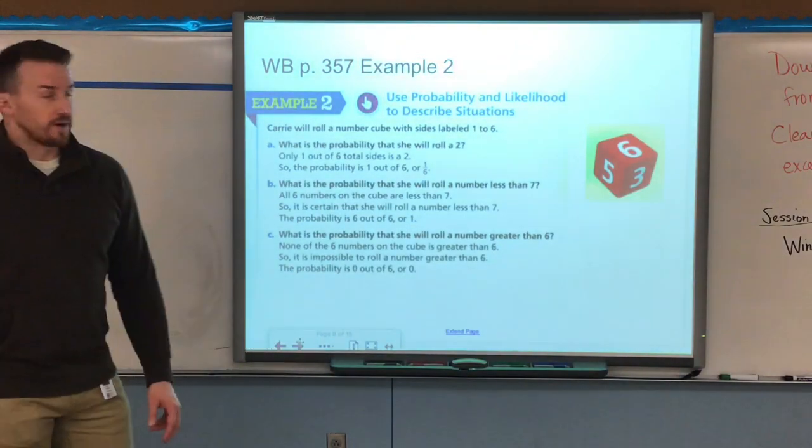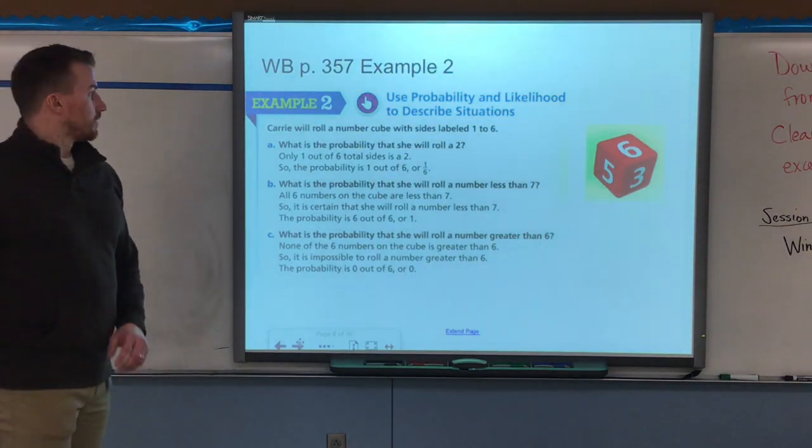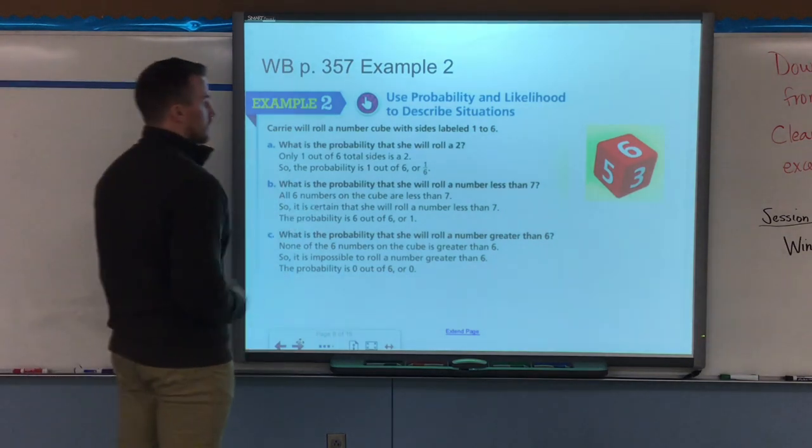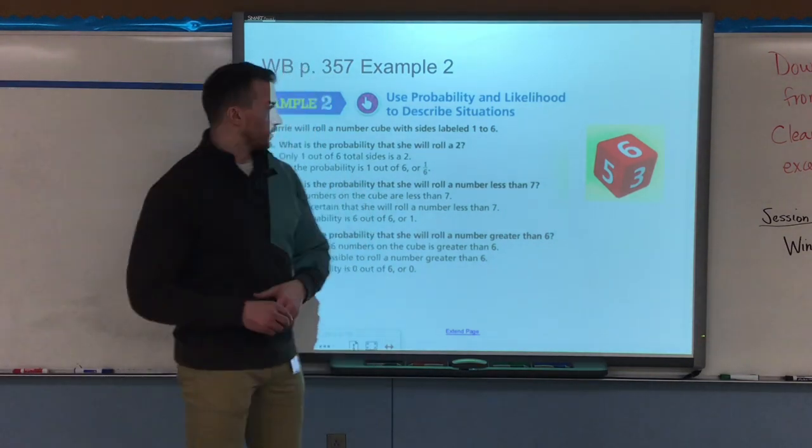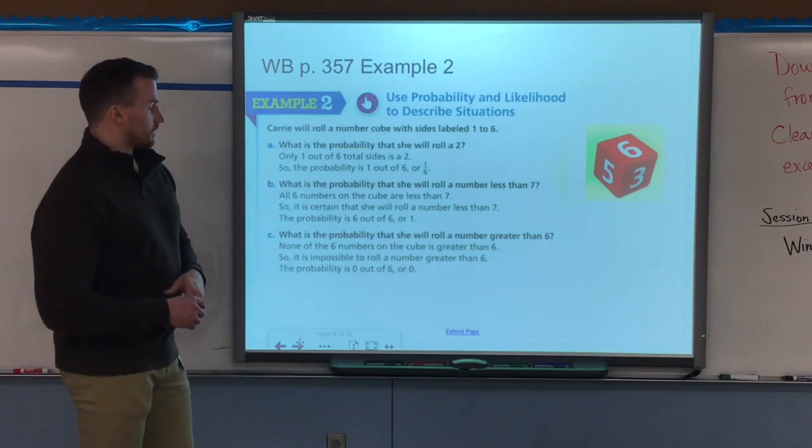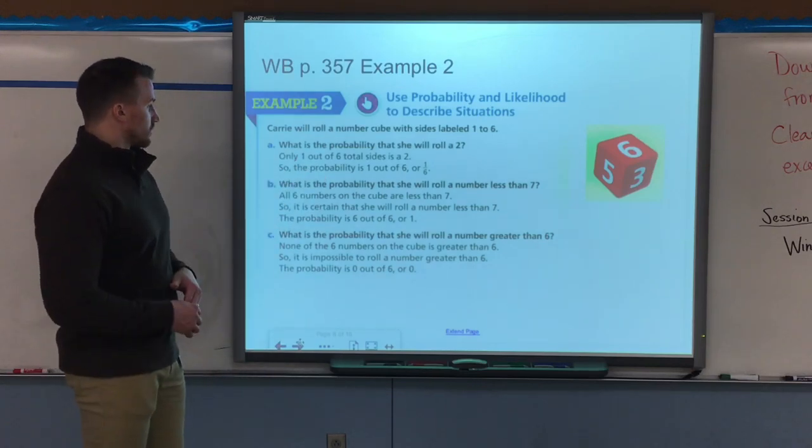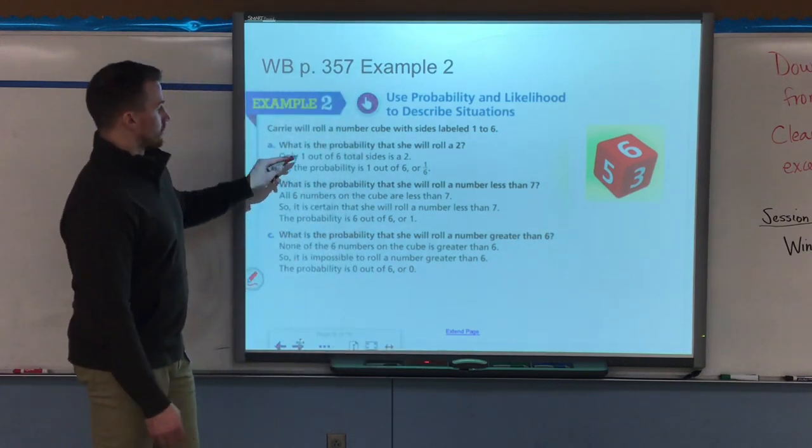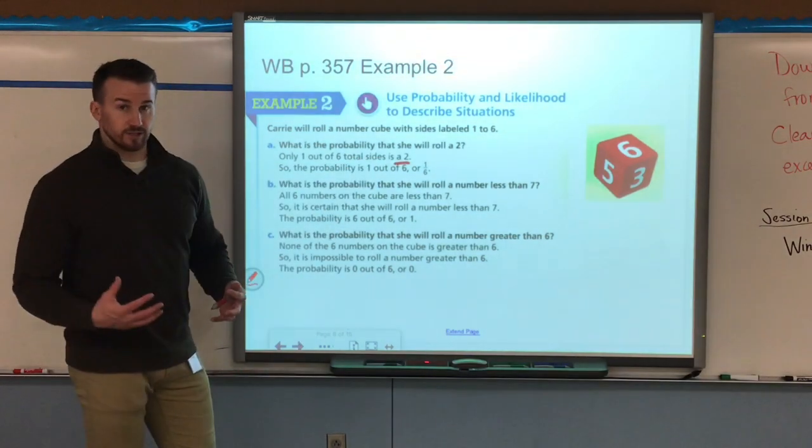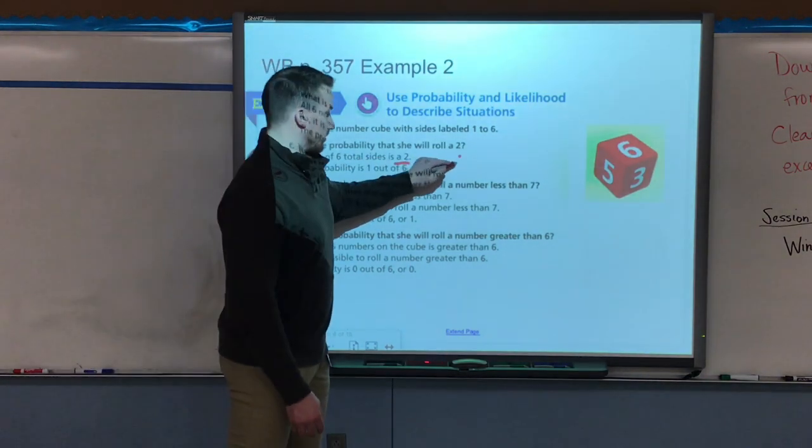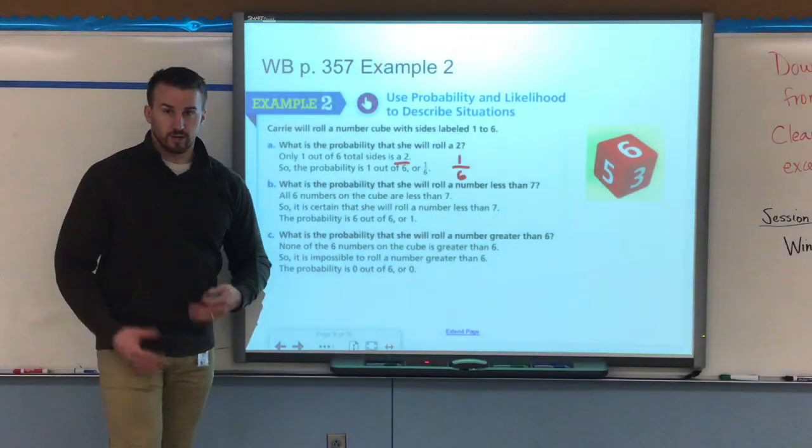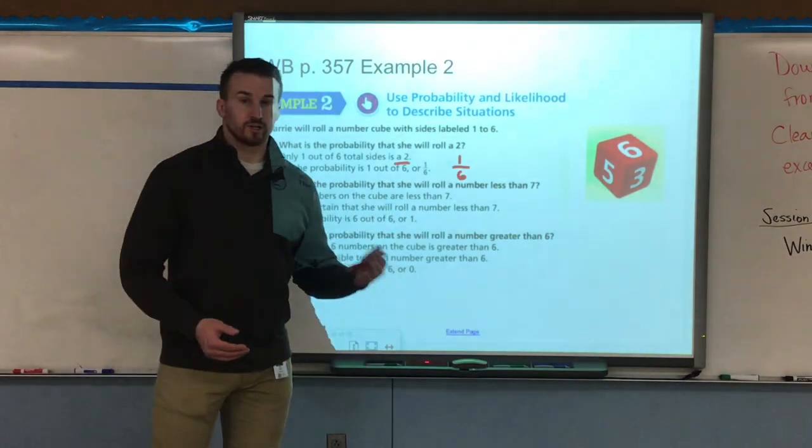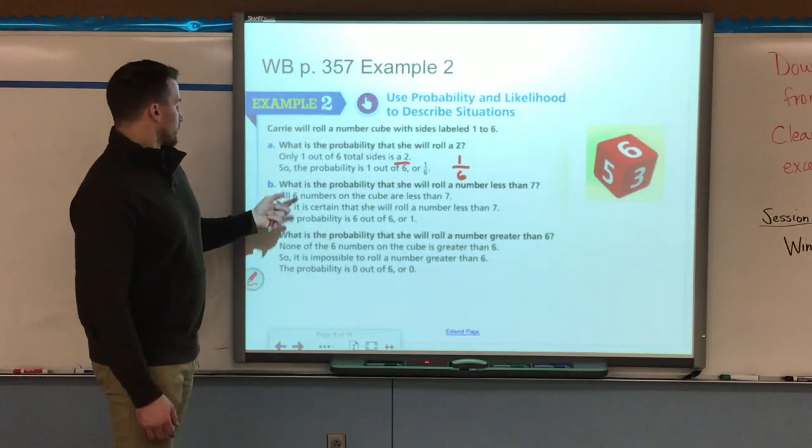Example two, now we're looking at using the probability and likelihood to describe situations. We have a six-sided number cube or die. Carrie is going to roll that number cube with the sides labeled one to six. Question A says what is the probability that she will roll a two? Because there's only one side that has a two on it out of the six, her probability is one sixth. That's the chance of that happening, and it's equal for all the numbers because each side has a different number.